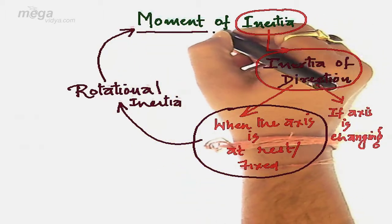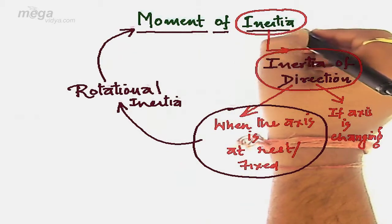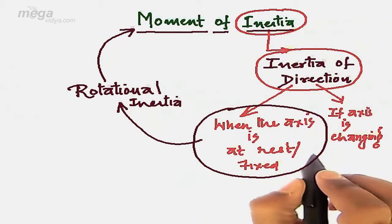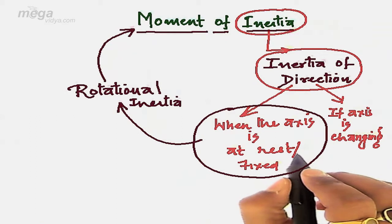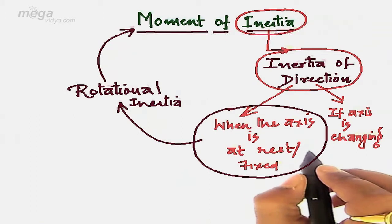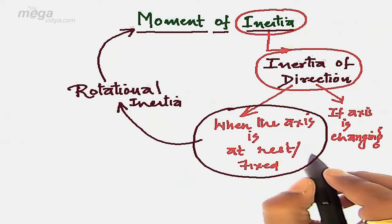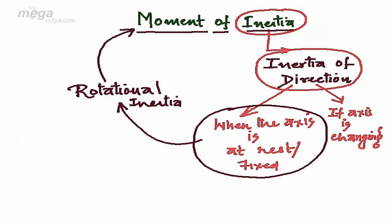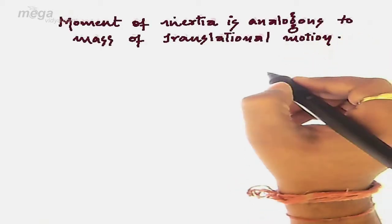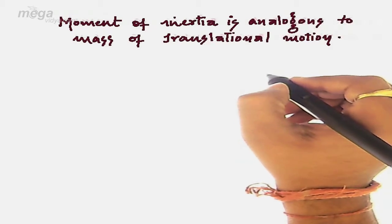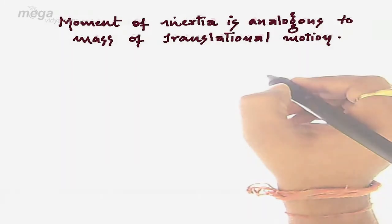So moment of inertia may be explained as the inability of any body to undergo rotational motion by itself or undergo rotation by itself. As mass is the measure of inertia, thus using the concept of analogy, we can say moment of inertia is analogous to the mass of translational motion.